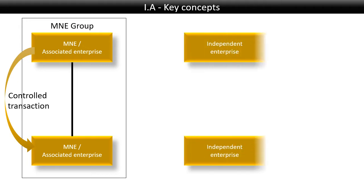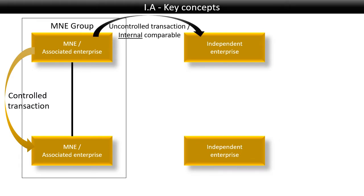Now what are uncontrolled transactions? Let's say we've got two independent enterprises and the top enterprise sells something to one of the independent enterprises. Now this would typically be called an internal comparable. And if what the top enterprise sells to the independent enterprise is exactly the same as what the top enterprise sells to the bottom associated enterprise, then these two transactions are potentially comparable — and this would be an internal comparable.